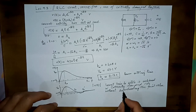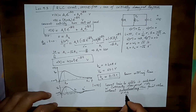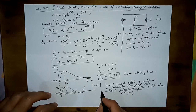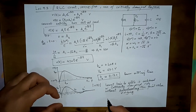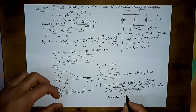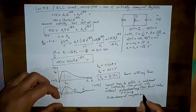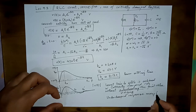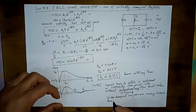This overshooting has another name in the literature and is known as ringing — the response rings across the final value. In the critically damped case there is no ringing. In the underdamped case, the settling time may be lower but with ringing or overshooting.